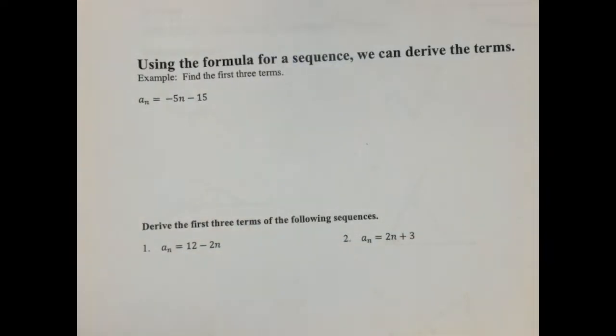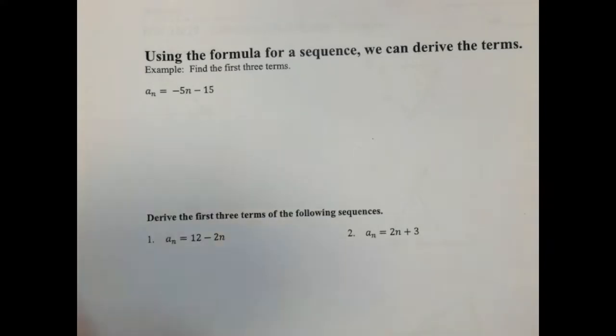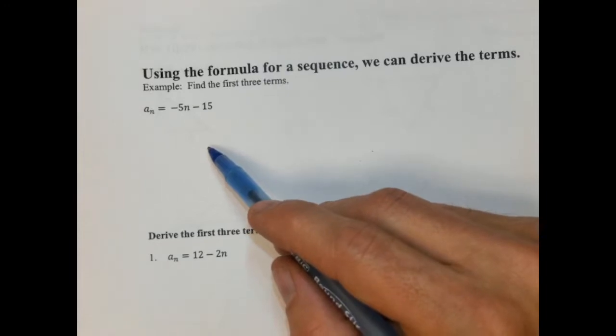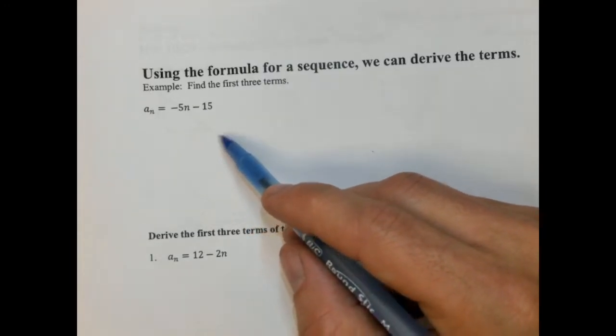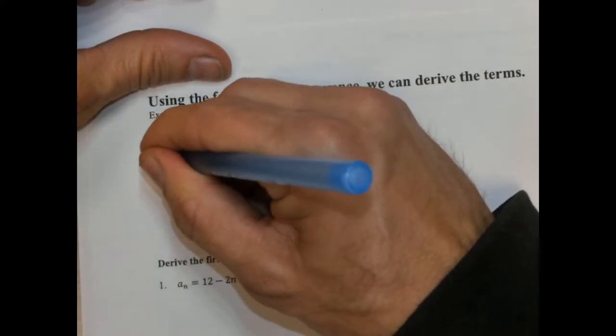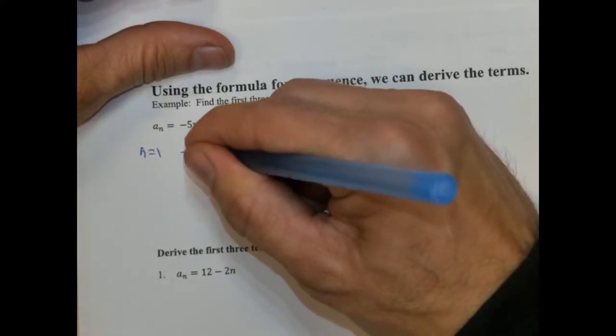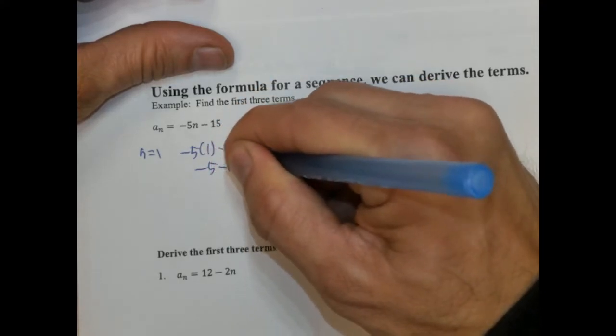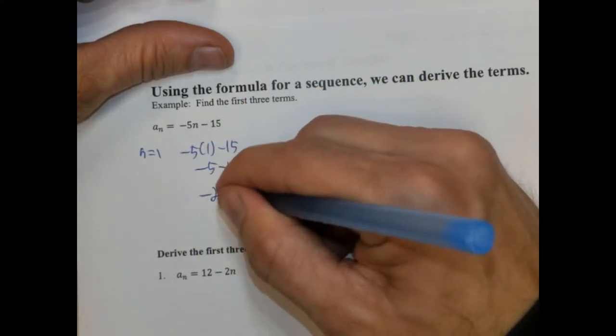So the first three terms. We got a_n equals negative 5n minus 15. We're looking for the first three terms. We're going to plug in 1, 2, and 3. So when n is 1, we're going to get negative 5 times 1 minus 15, which is going to be negative 5 minus 15, which is negative 20. That's our first term.